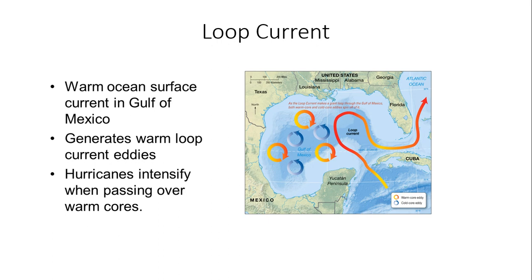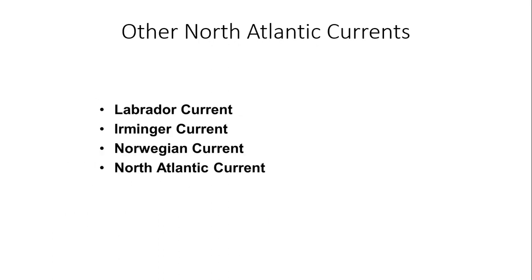Hurricane tracks are getting better in forecasting. However, intensity has always been a challenge, and when you have these warm loop currents, that can really make a difference in rapid intensification. Other North Atlantic currents of note include the Labrador current, the Irminger current, the Norwegian current, and the North Atlantic current.